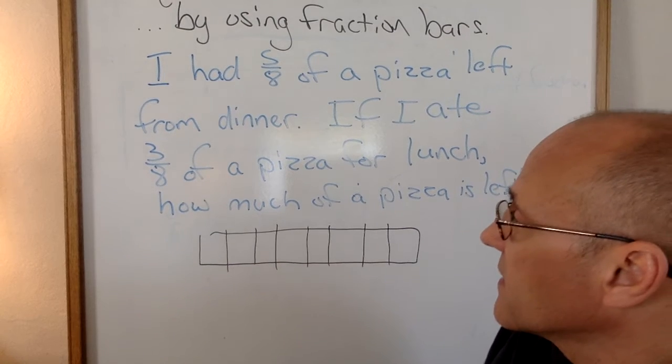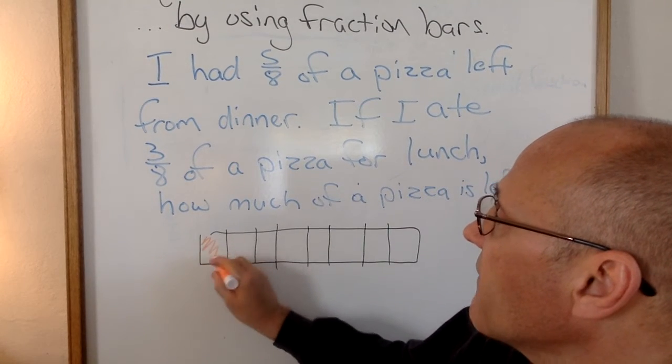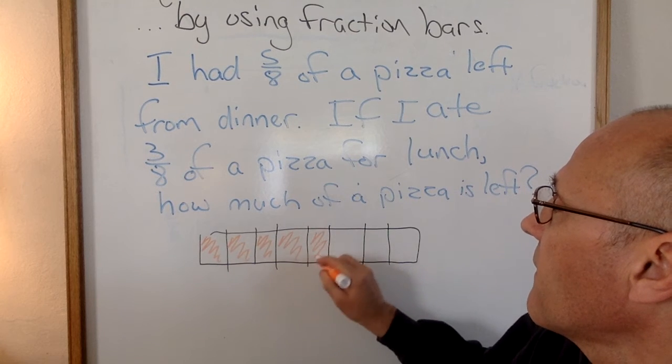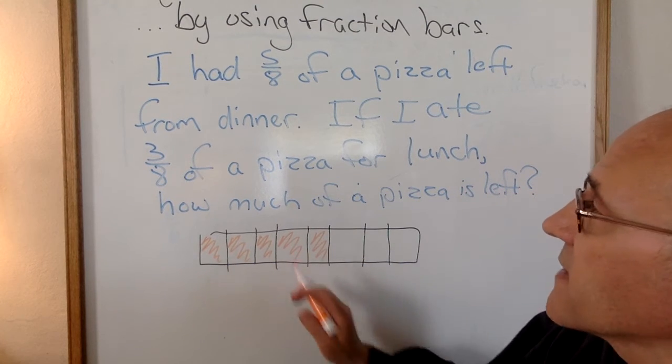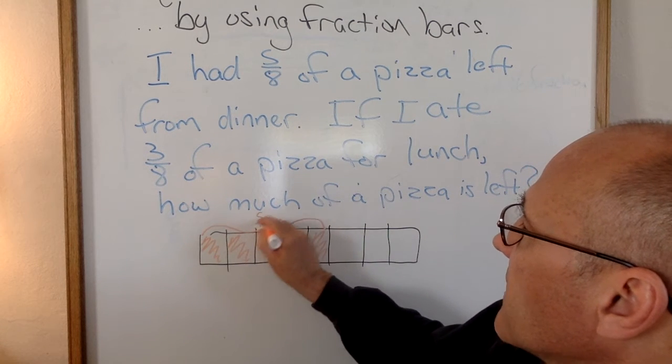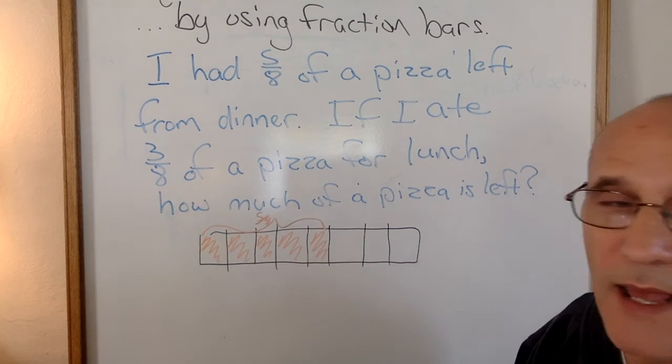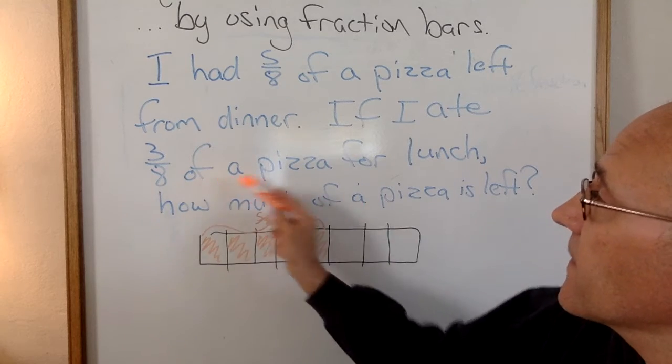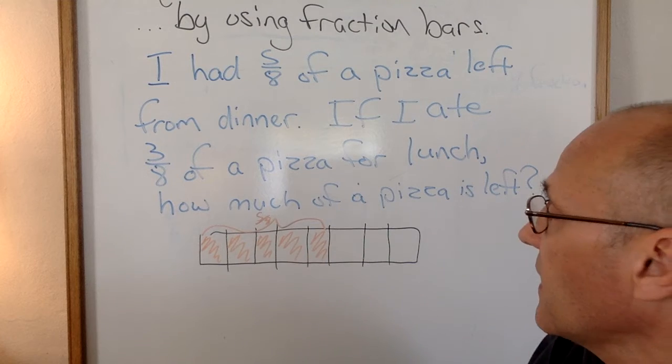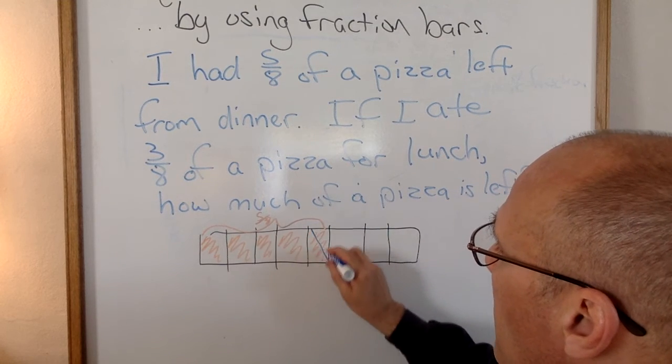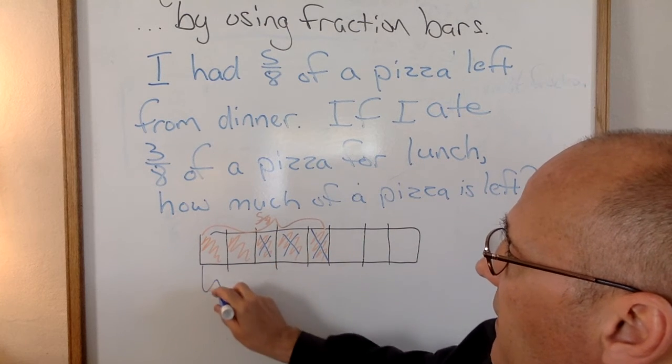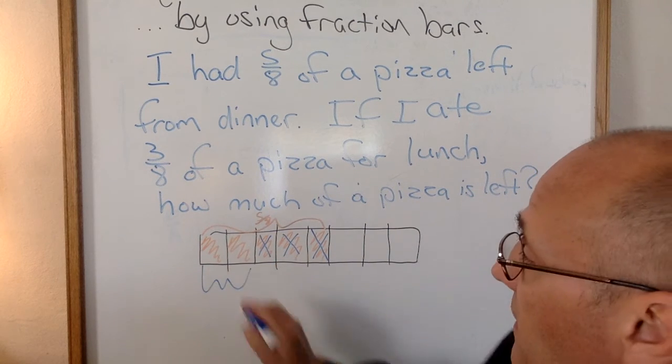And I had 5/8 of a pizza. So I'm going to shade in 5: 1, 2, 3, 4, 5. So that's how much pizza I had. A lot of times I like to mark it on top, 5/8. Now if I eat 3/8 of the pizza, I'm going to eat 1, 2, 3 eighths. This is the part left.